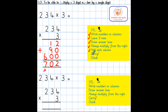Did I need to carry? Yes, I did. My final step is to check: 2 add 0 add 0 equals 2; 1 ten add 9 tens equals 10 tens; and 600 add the 100 gives me 700. So 234 multiplied by 3 equals 702. And I can tick the final step off.